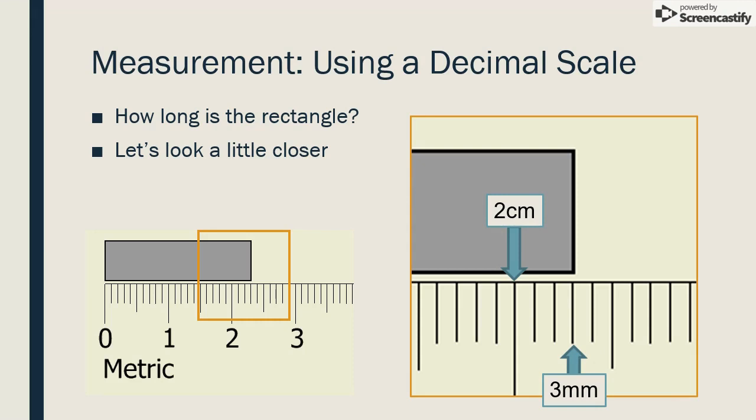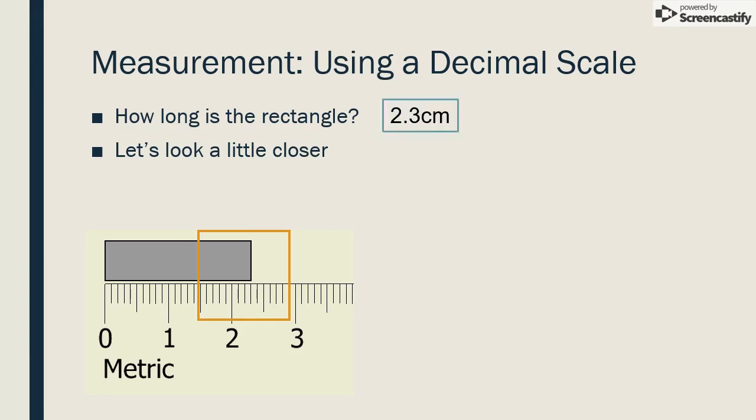So we have two centimeters and three millimeters. As we've seen, each millimeter is one-tenth of a centimeter, so we report our measurement in centimeters with a decimal point and a three in the tenths place. So the length of our rectangle is 2.3 centimeters. It would also be appropriate to write this measurement as 23 millimeters.